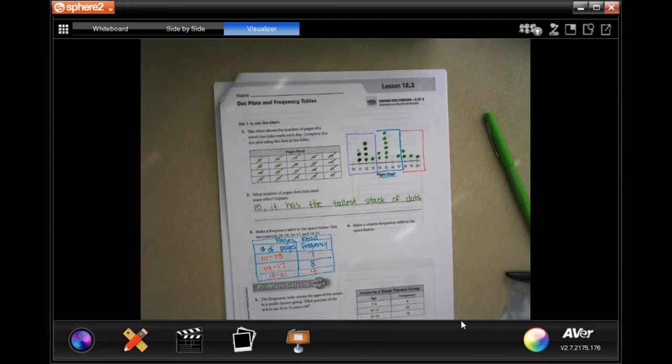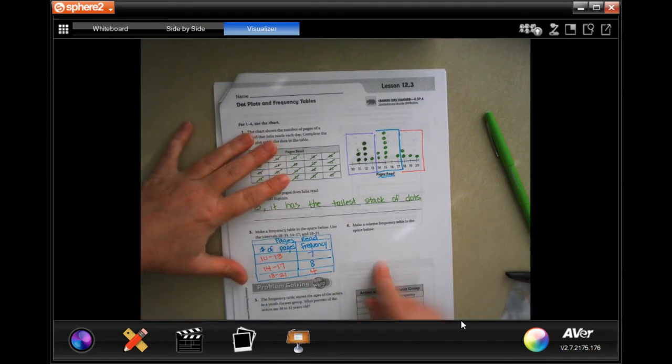It says to make a relative frequency table in the space below. Okay, so we're going to do exactly what we do here.